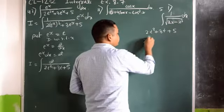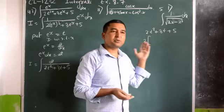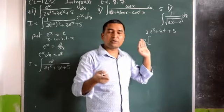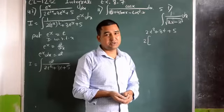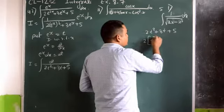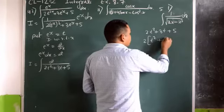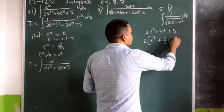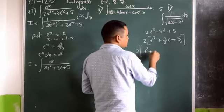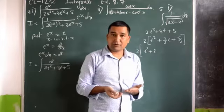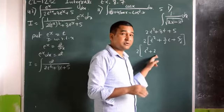Let's do the rough work. We have 2(t^2 + 3t + 5). We discussed how to convert into complete square form in previous sessions, so I won't go deeply into that here — please check the previous session if you have some problem. Now, I am going to take 2 as common, because we always need a coefficient of 1 for t^2. So inside we have t^2 + (3/2)t + 5/2.